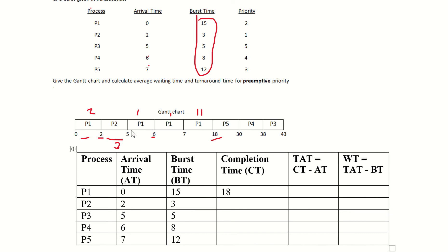The completion time will be the right-hand side value — the value at the right-hand side of each process in the Gantt chart. So the completion time of P2 is 5. Similarly, P3's completion time is 43.